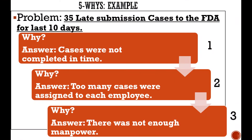Let's consider an example. Say we have a problem of 35 late submissions to the FDA over the last 10 days, and we are using Five Whys to get to the actual root cause. We start asking why: why were 35 cases submitted late to the FDA? The answer to the first why is that cases were not completed in time. Asking again why, we may realize that too many cases were assigned to each employee, and that is why they could not get to all the cases within the deadline.